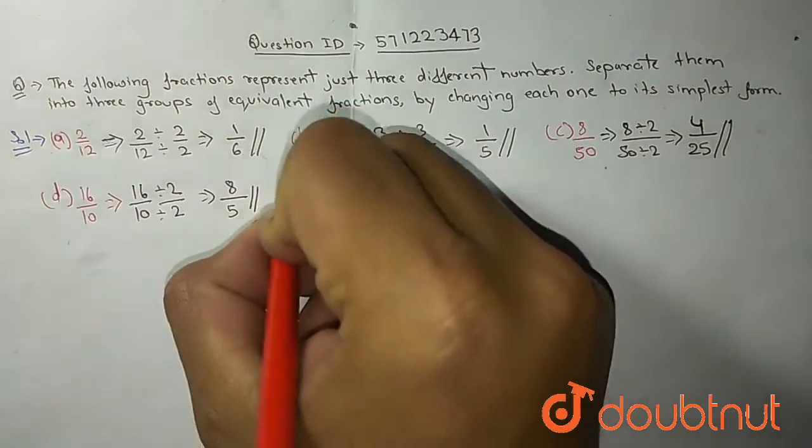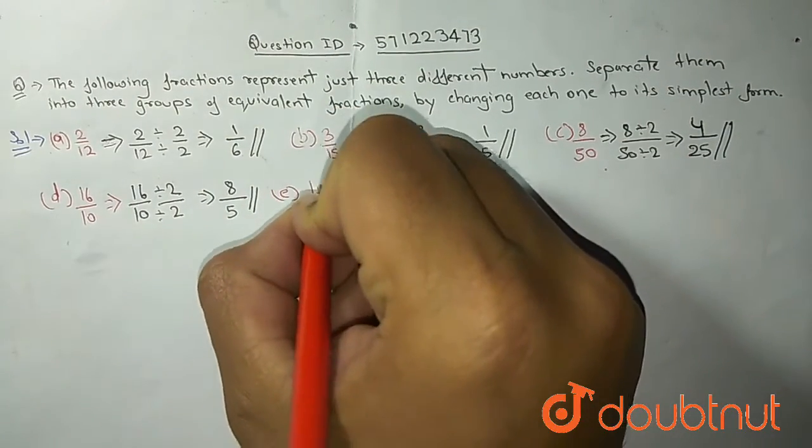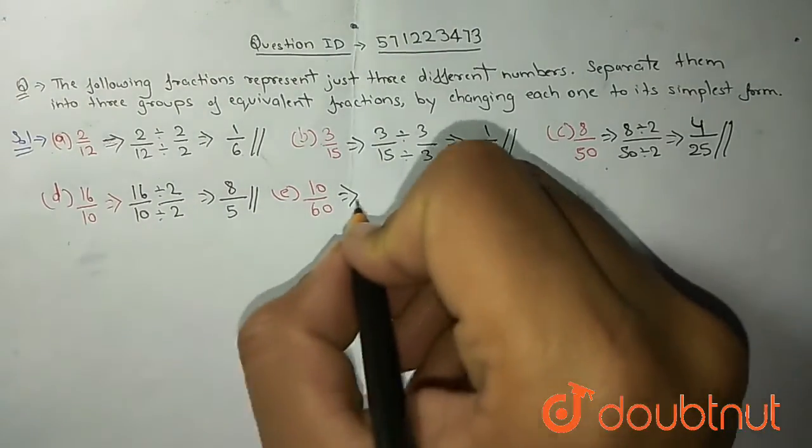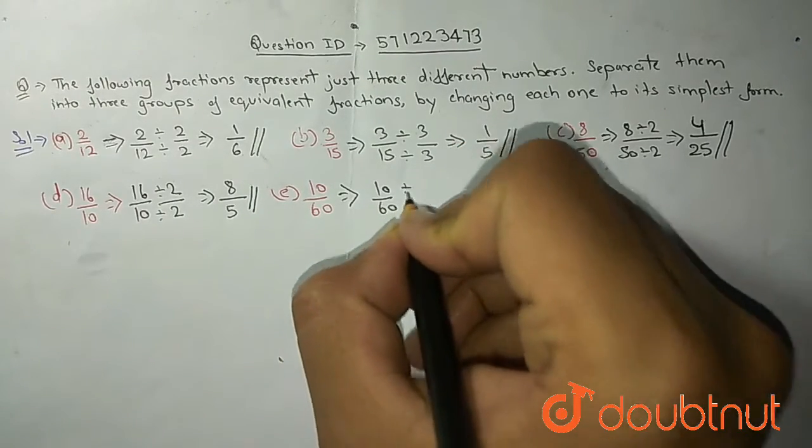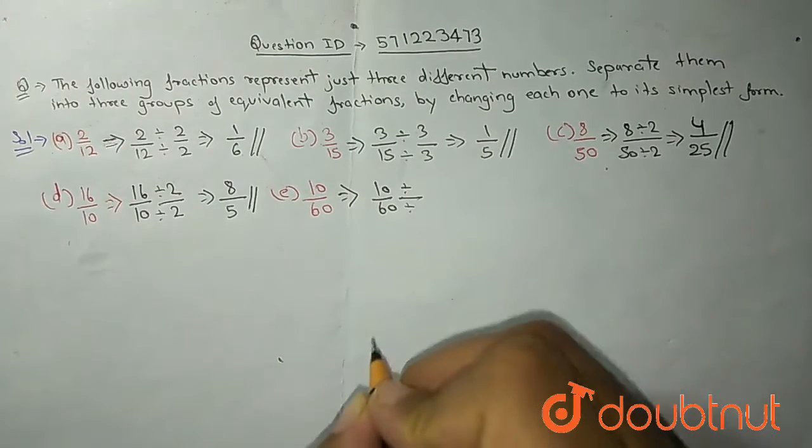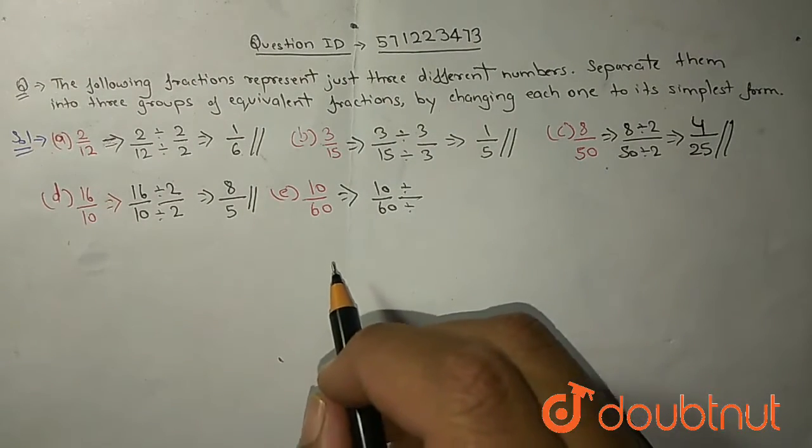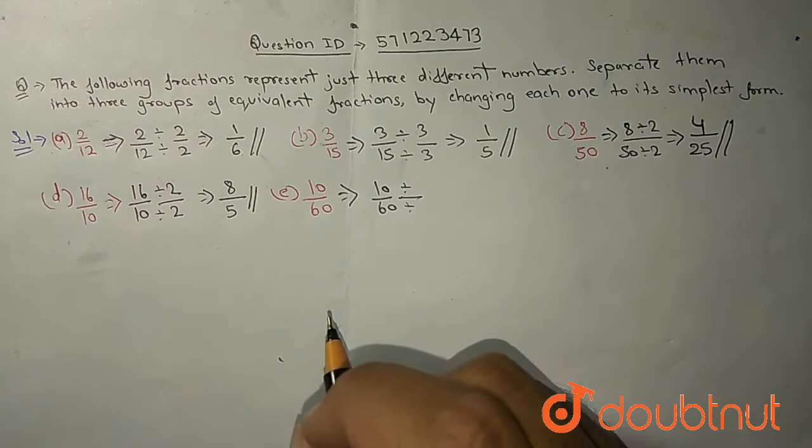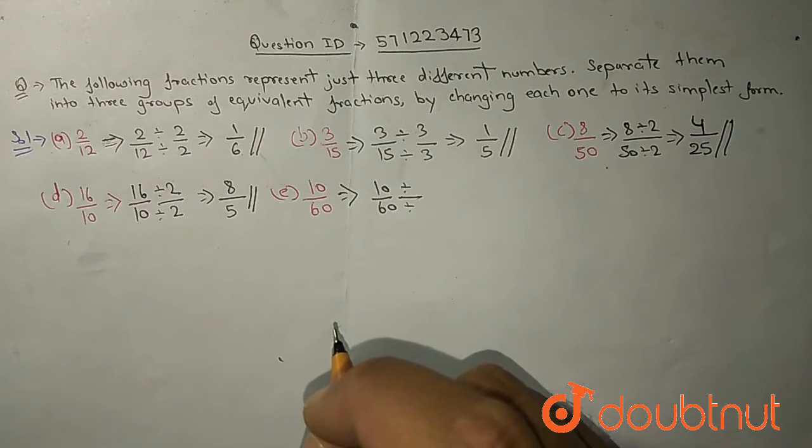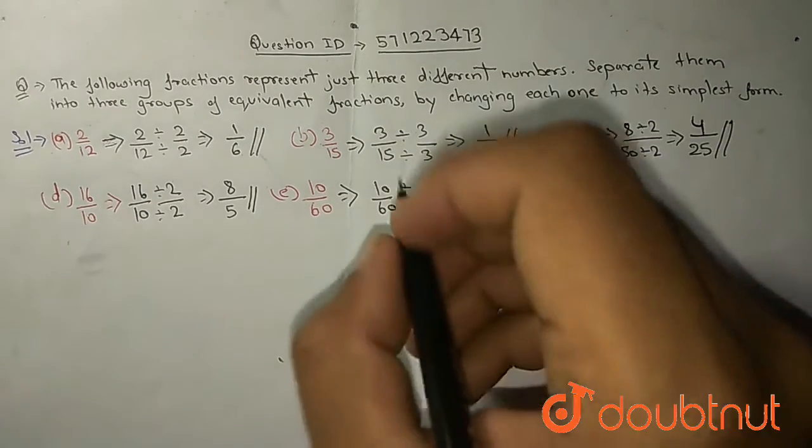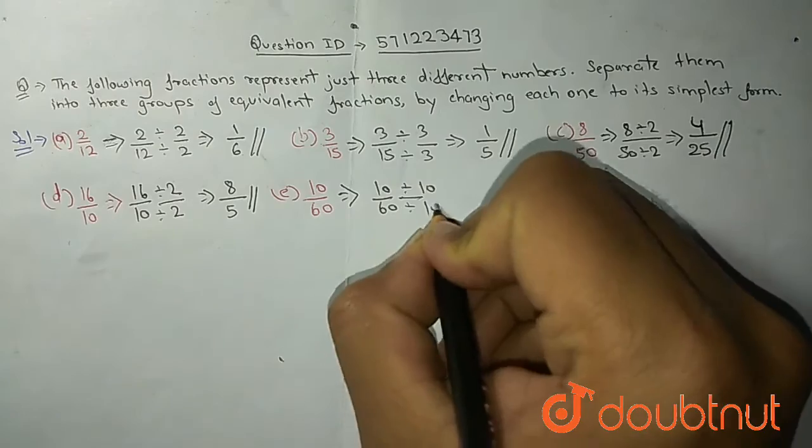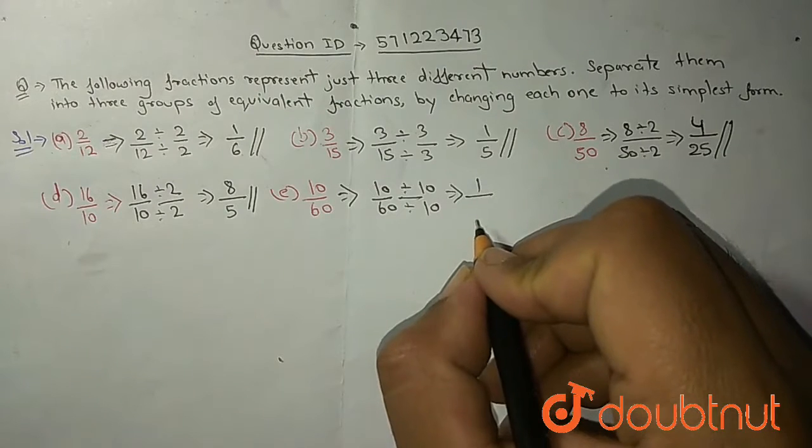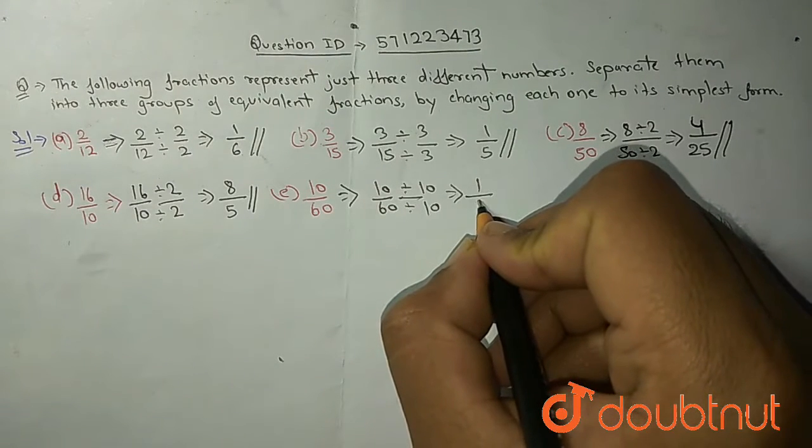Now part E. E part is 10 upon 60. Let's divide this. What table do 10 and 60 come in? Obviously in the table 10 comes and 60 also comes. So we can divide by 10. Dividing by 10 we get 1 and 10 times 6 is 60. So the answer will become 1 by 6.